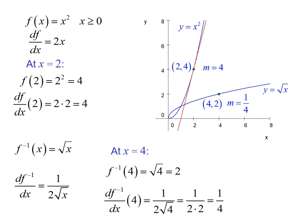So here's the relationship we want to look at. We have (2,4) on the original function, we have (4,2) on the inverse function. The slope is 4 at that point on the original and 1 fourth on the inverse.